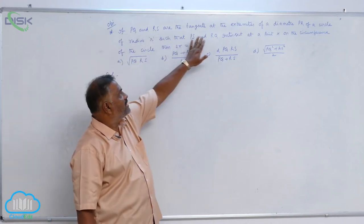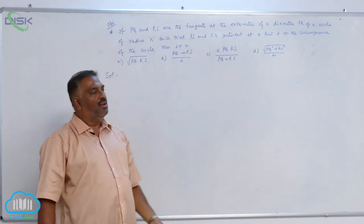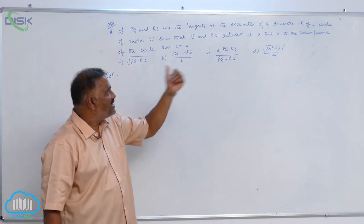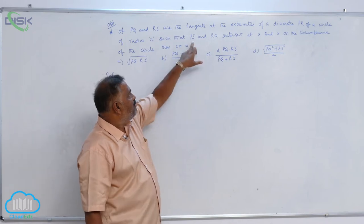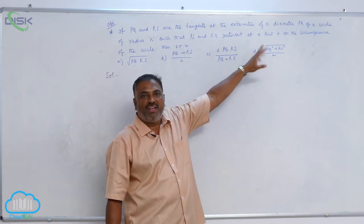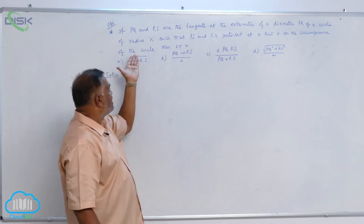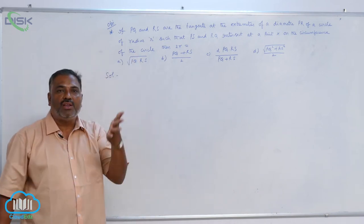If PQ and RS are the tangents at the extremities of the diameter PR of a circle of radius R, such that PS and RQ intersect at a point X on the circumference of the circle, then 2R is equal to what?